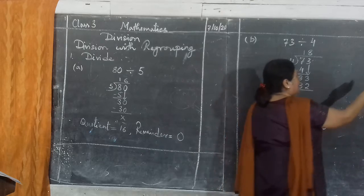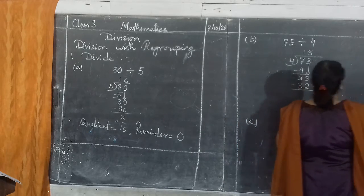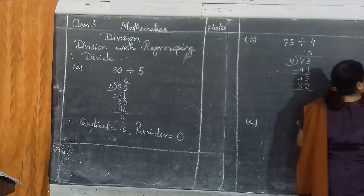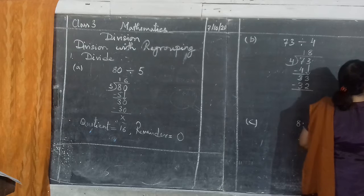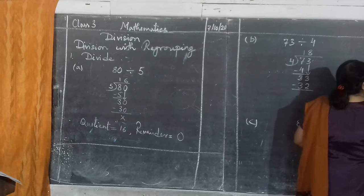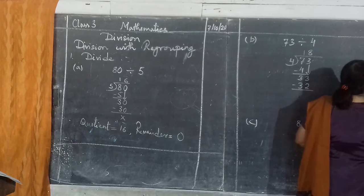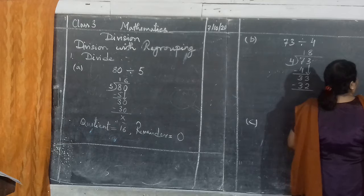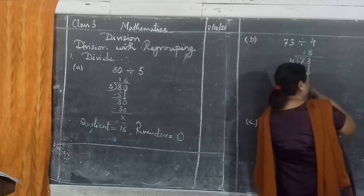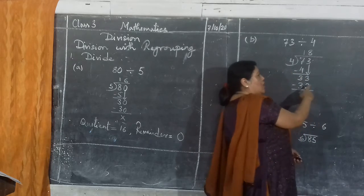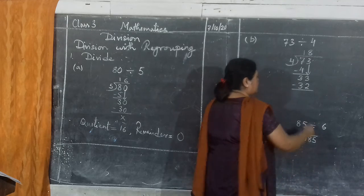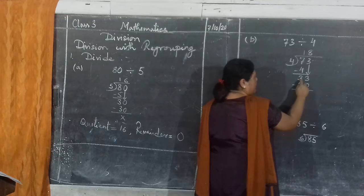You can say it or you can write it here also. 4's table: 4 sevens are 28, 4 eights are 32, then 4 nines are 36. You can see the difference. 36 is bigger than 33, so this is cancelled. This will be the answer. 4 eights are 32. Now 3 minus 2 is 1, 3 minus 3 is 0.